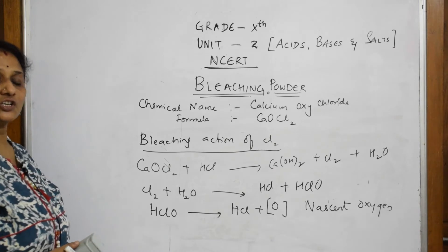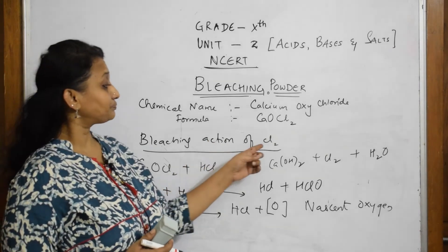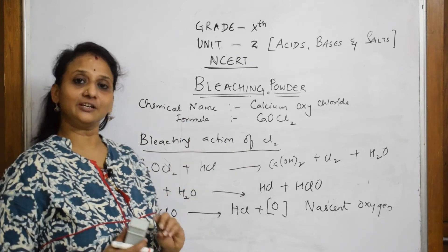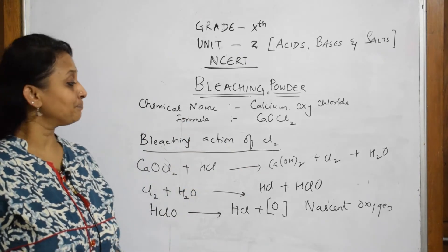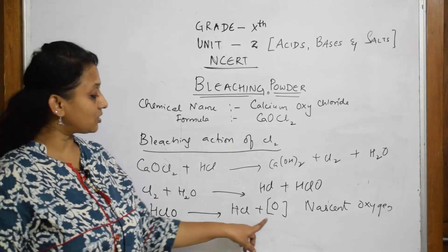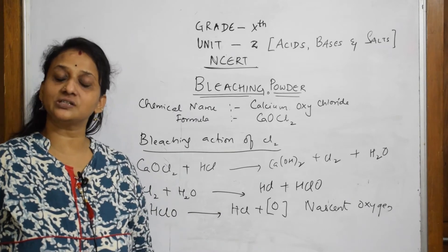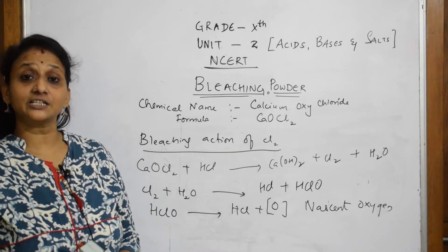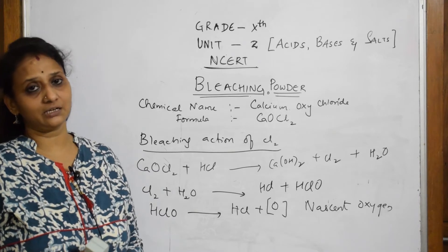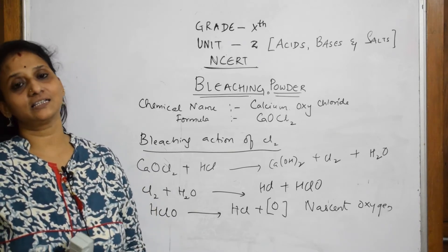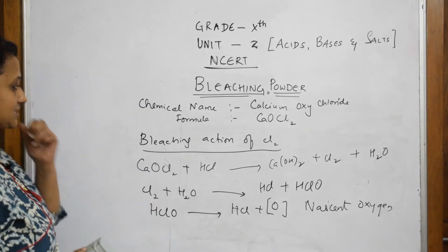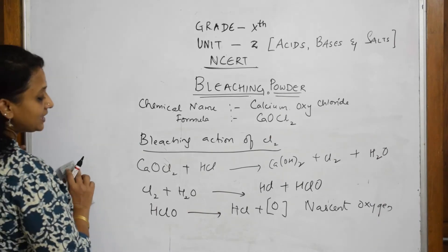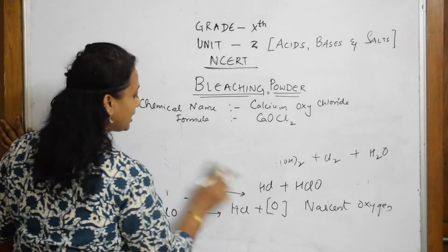So when your teacher asks how chlorine acts as a bleaching agent, you can write the reaction or simply say: because of the release of nascent oxygen, which goes into the pores of the particular fabric and bleaches the cloth. That is the bleaching action.